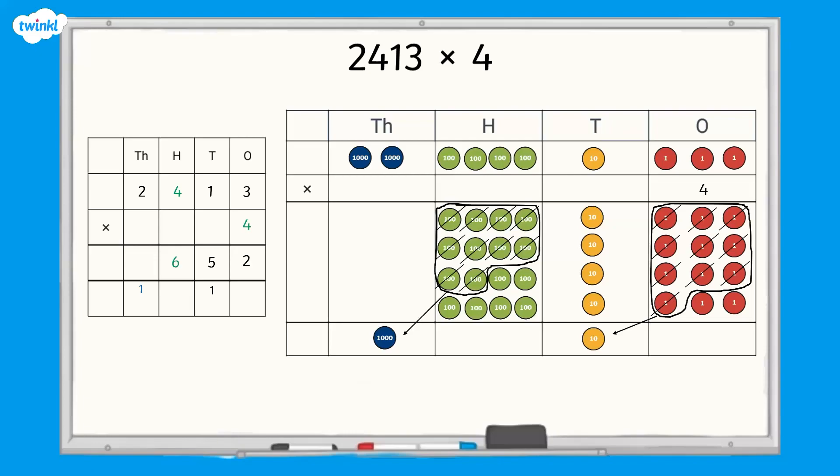Finally, we multiply the thousands. Two thousands multiplied by four is eight thousands. Add the regrouped thousand to make nine thousands in total.